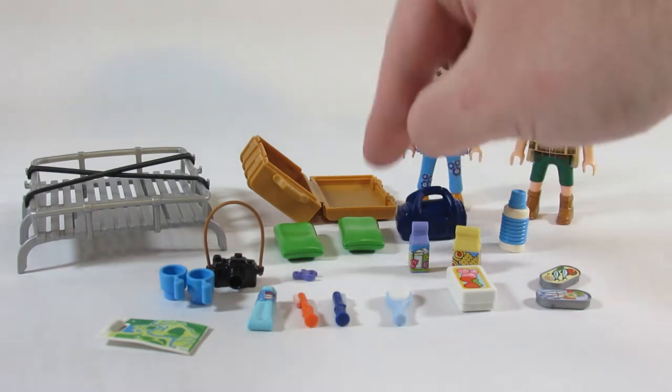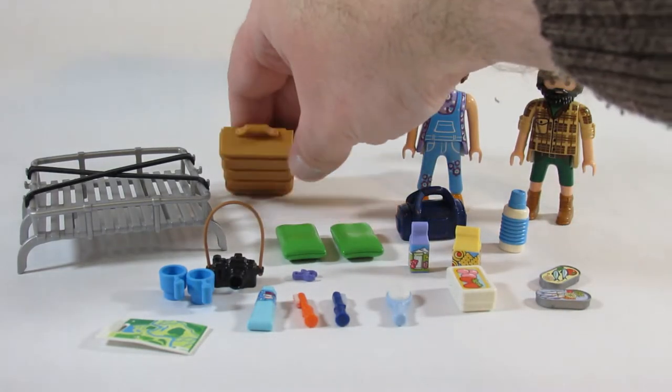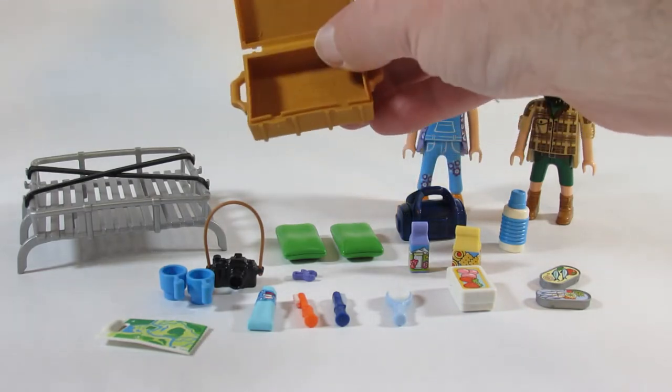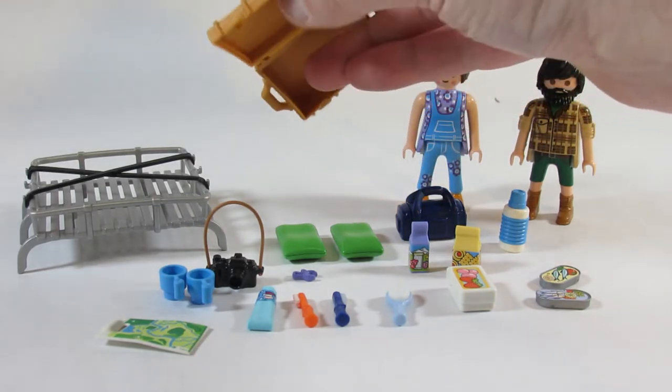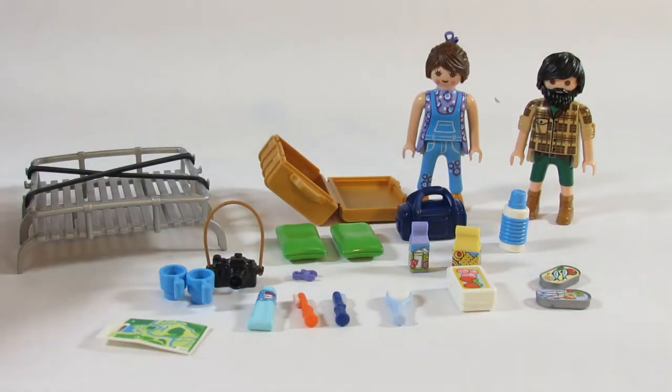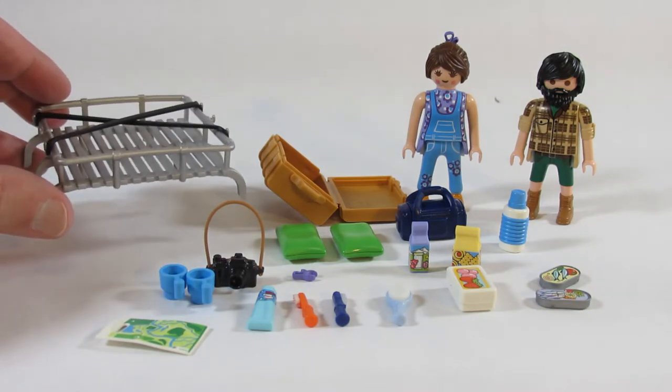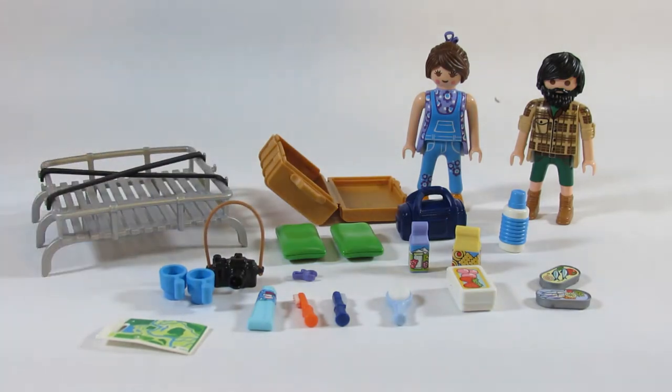We have a couple of pillows and a chest or box that we can put some of the items in, and a rack that goes on top of the camping bus. And here are the characters.